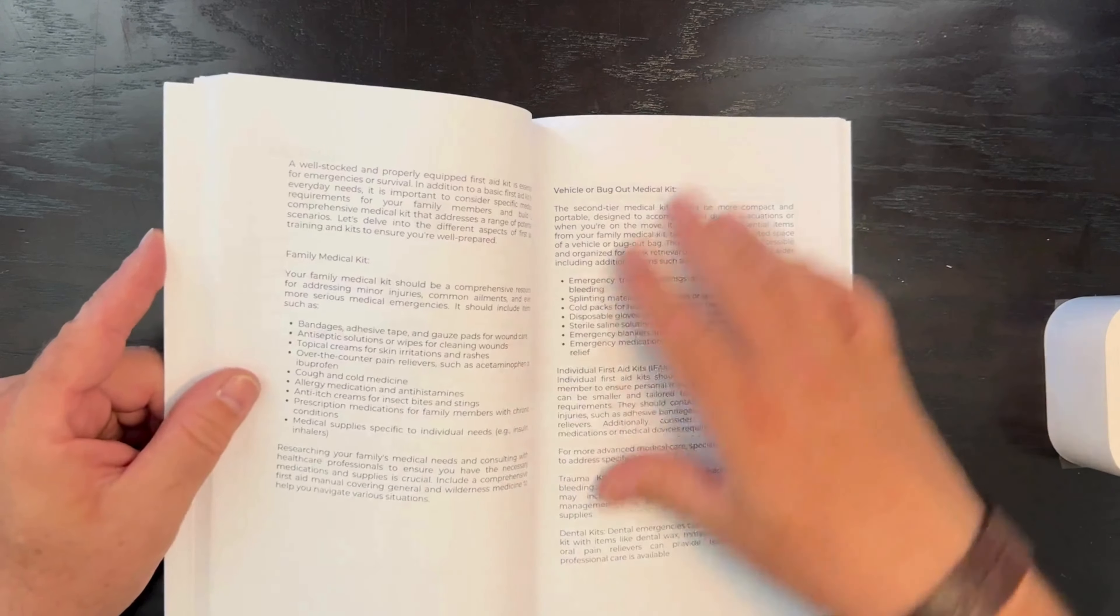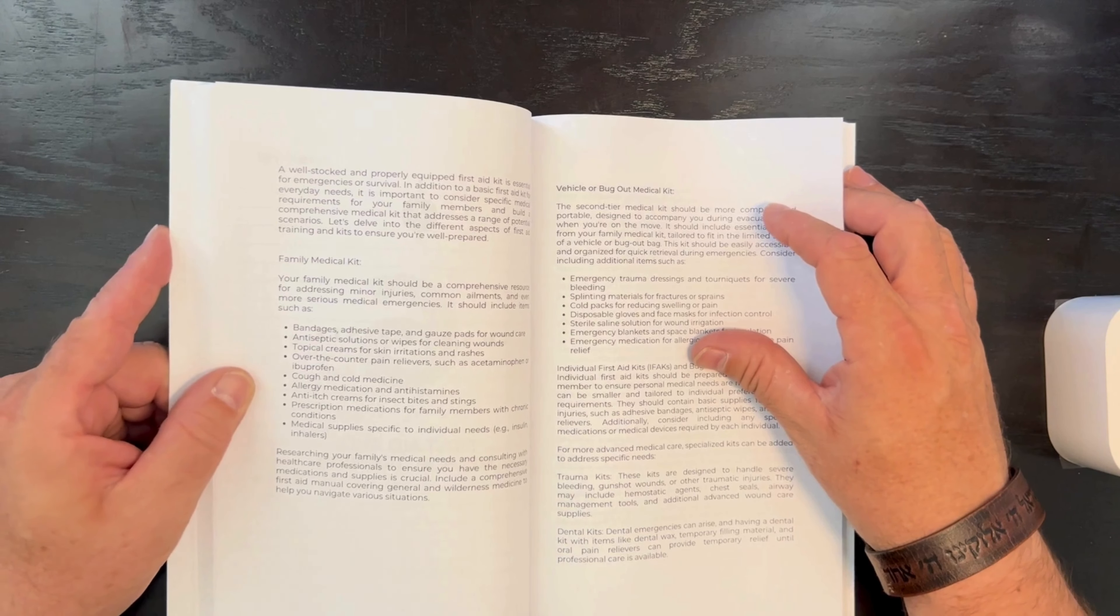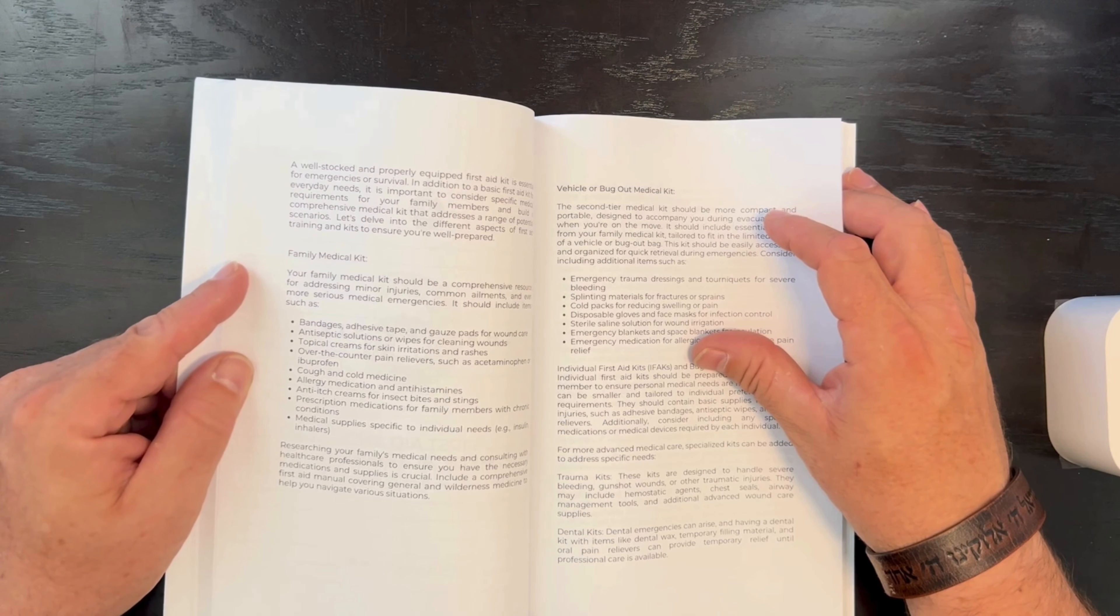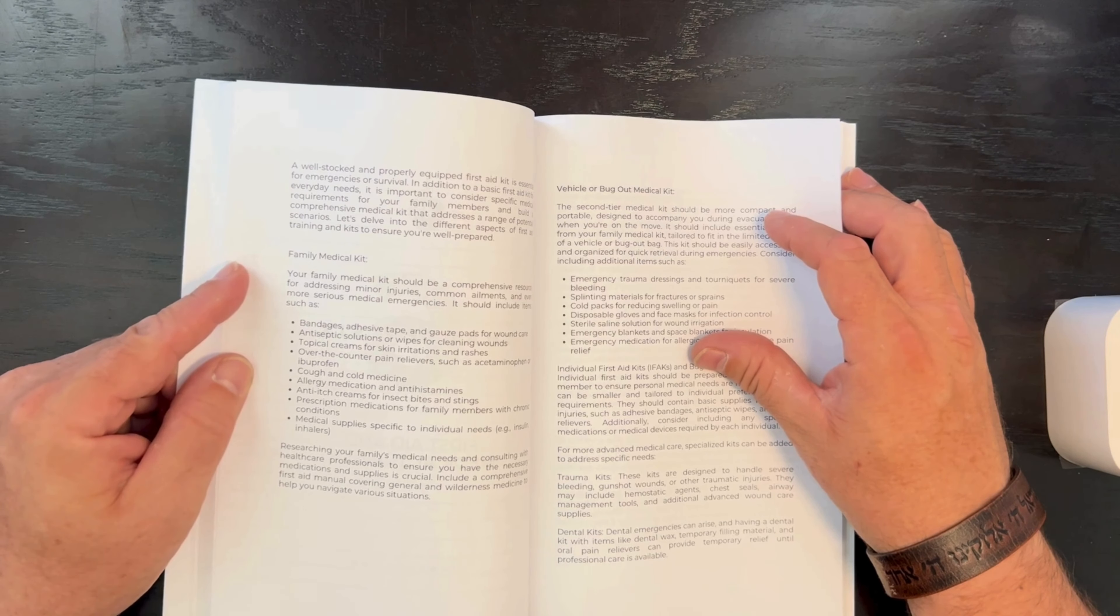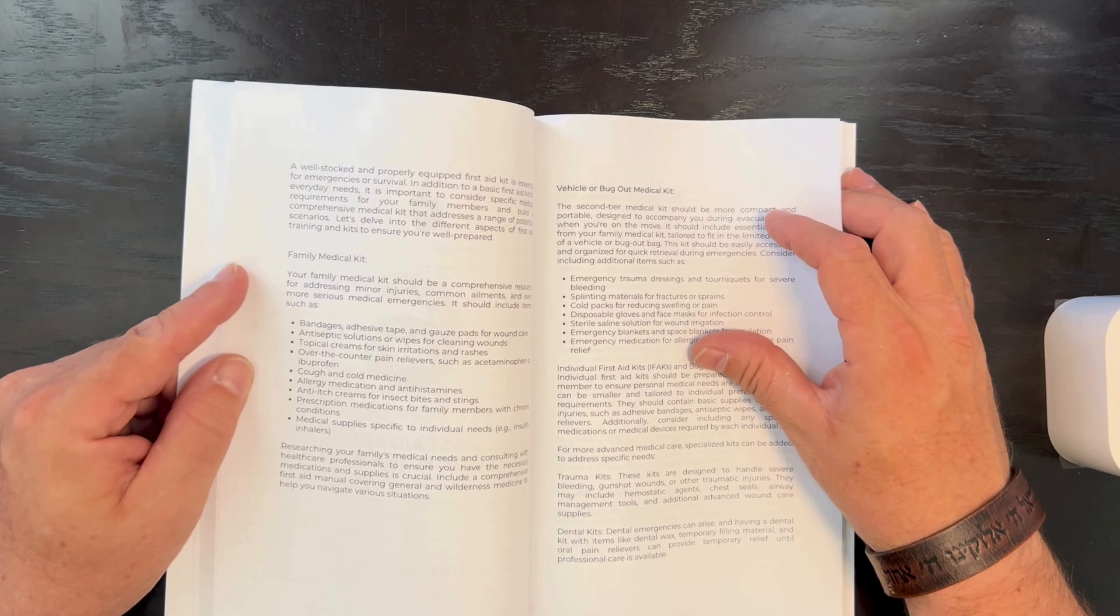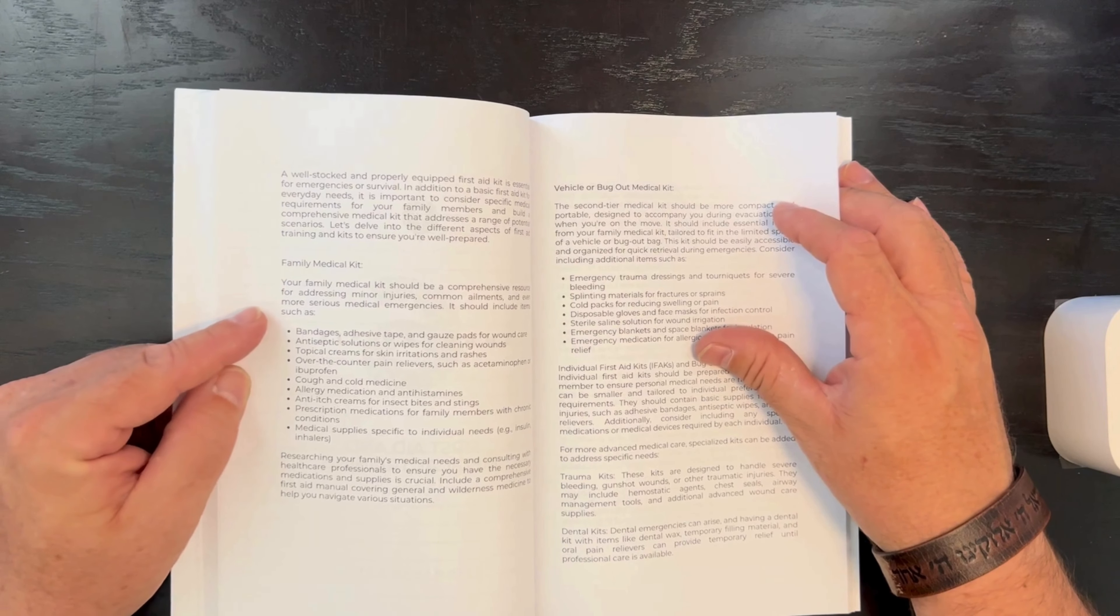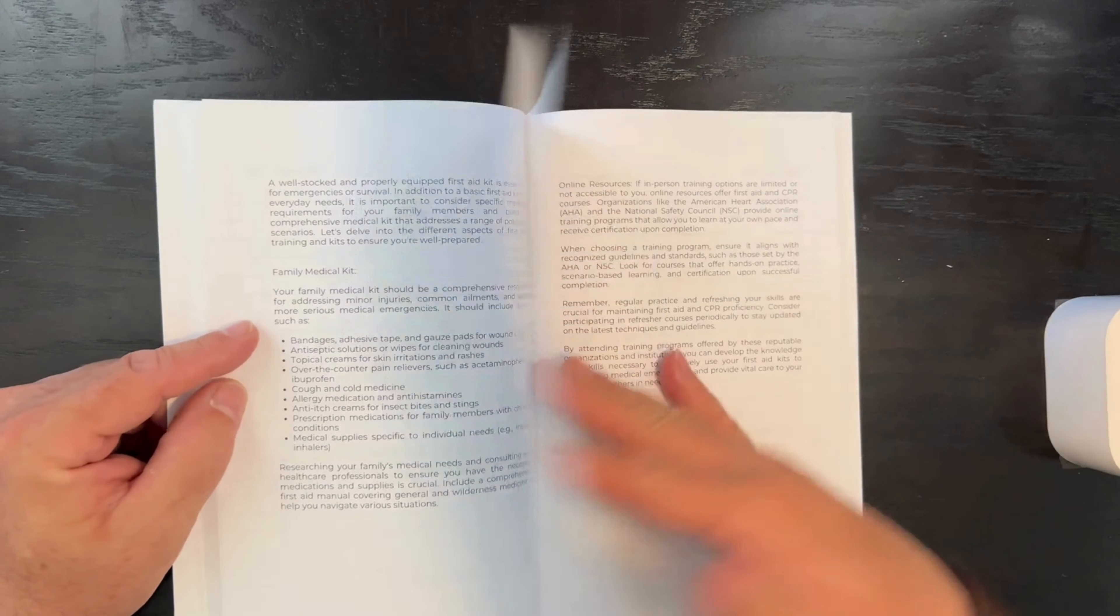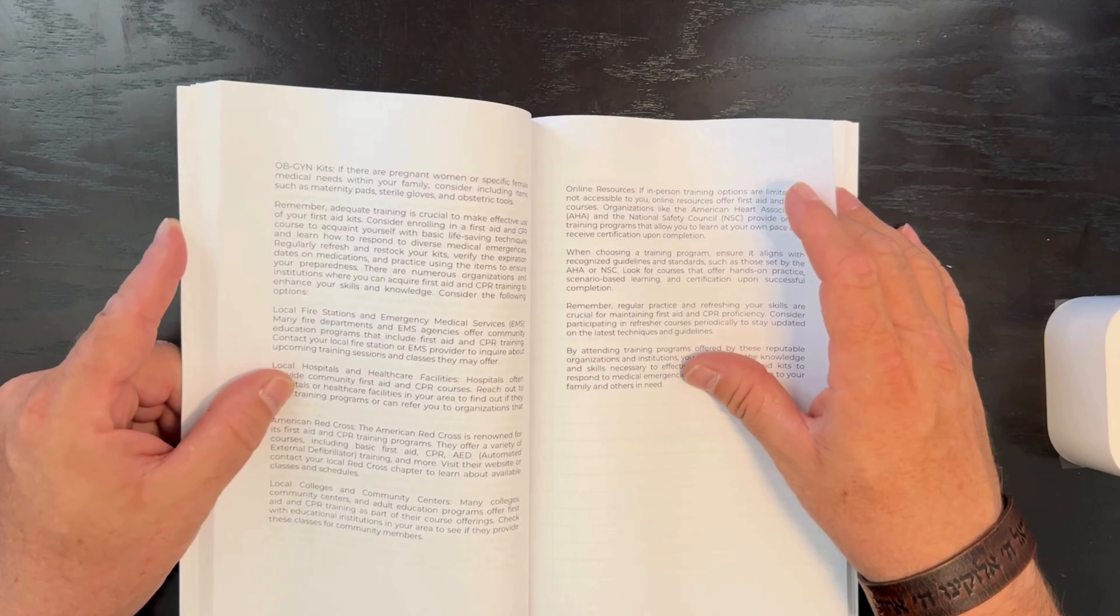First aid and medical training, we inventory that also. And then we make lists of things where we need first aid kits. What type of first aid kits? Is it a boo-boo kit? Is it a kit for if there's someone in your family that is pregnant, we have to create an OB kit, or someone who requires constant injections for medicine? Things that you have to have for that. So that should be your family medical kit. Then you need a vehicle or bug out medical kit, individual first aid kits to go in your bug out bags or things of that nature.